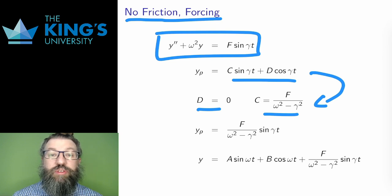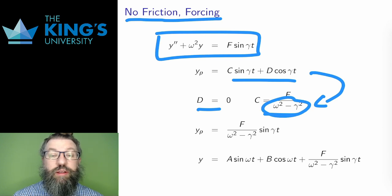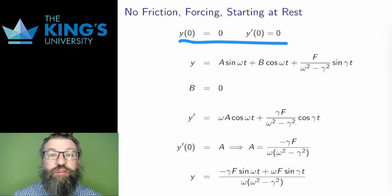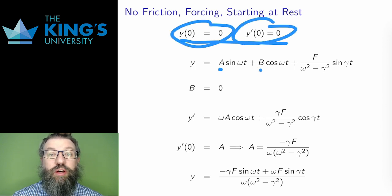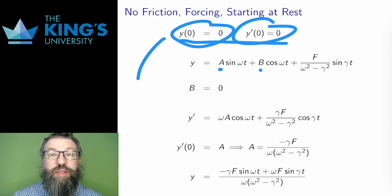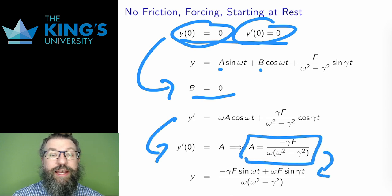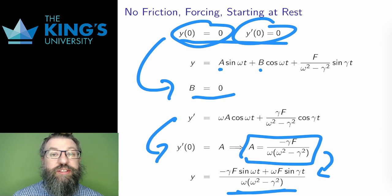I'll assume for now that the natural frequency and the forcing frequency are different, so this is not division by zero. Then I have the particular solution, so I have the general solution by adding the particular solution to the homogeneous solutions. Now let me do this with initial conditions. I'll start the system at rest, no displacement and no initial velocity. Solving for a and b means evaluating y is zero and y prime is zero, making them both equal to zero and determining the constants. The first equation gives b equals zero, and the second initial condition gives this strange expression for a. If I simplify it down a bunch, this is the particular solution. It looks a bit messy,